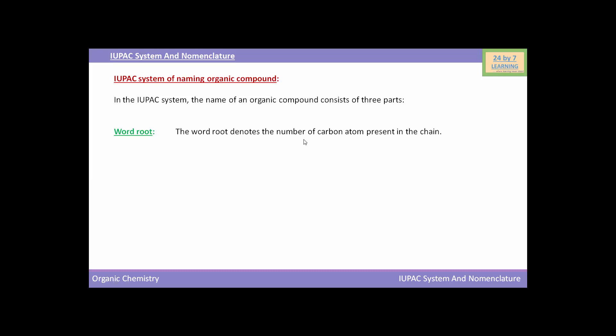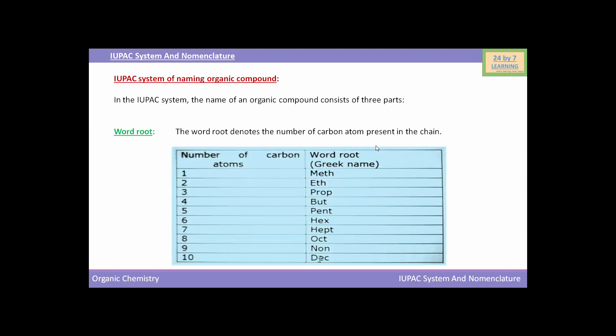The word root denotes the number of carbon atoms present in the chain. In this table, the word roots from carbon number 1 to carbon number 10 are given.